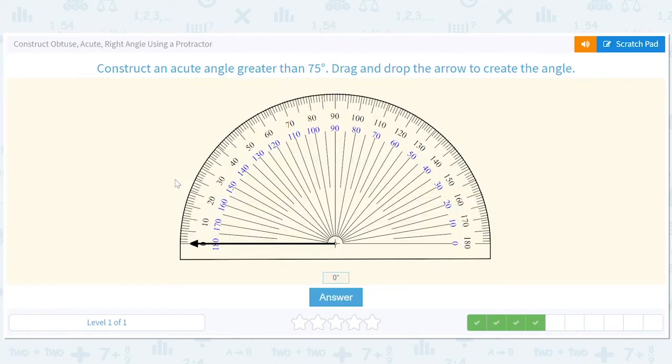Construct an acute angle greater than 75 degrees. It's getting interesting. 40 won't work because it's an acute angle, but it's not greater than 75 degrees. So we don't have much here. We have between 75 and 90, right? Because we can't use 90 - that's already right. Anything bigger is obtuse.